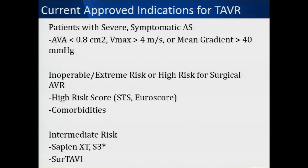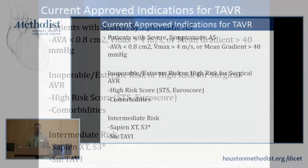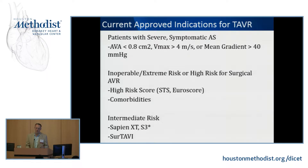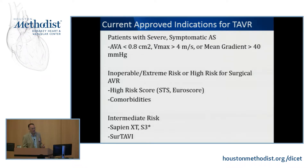In the United States today, the current approved indications are patients with severe symptomatic aortic stenosis — an aortic valve area less than 0.8 centimeters squared, a peak velocity greater than 4 meters per second, or a calculated mean gradient greater than or equal to 40 millimeters of mercury. In addition, patients must have clinical characteristics placing them at intermediate, high, or extreme risk for surgical aortic valve replacement, due to comorbidities or things like a porcelain aorta.